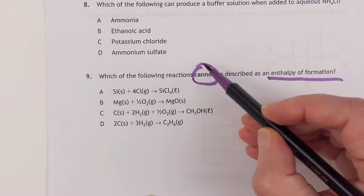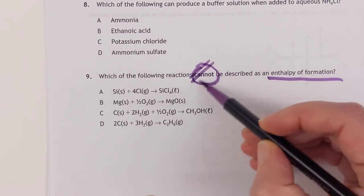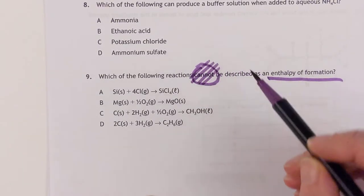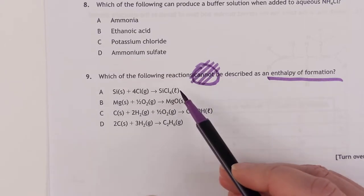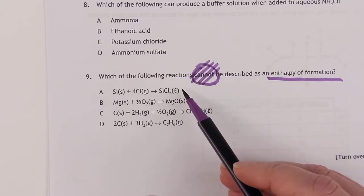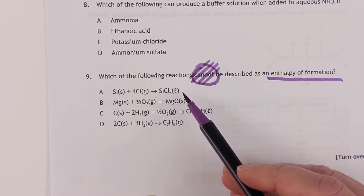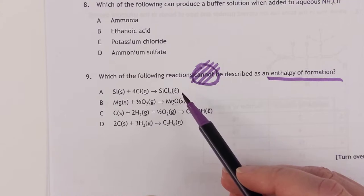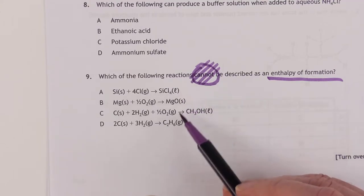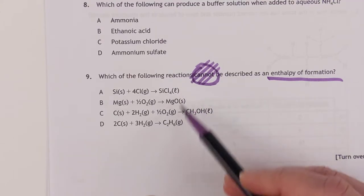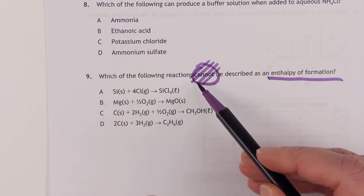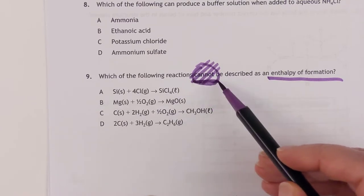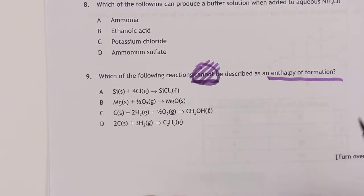Because if you miss that — and it's so easy to blank it out in moments of stress — then you will jump on the first correct answer, which is wrong of course. But if you go back and check, you'll find there are multiple ones that are correct, and that forces you to look again. And now, hopefully, you'll see the 'cannot.' Just a little bit of exam technique there.